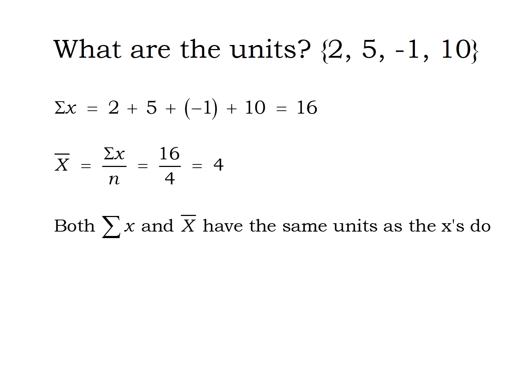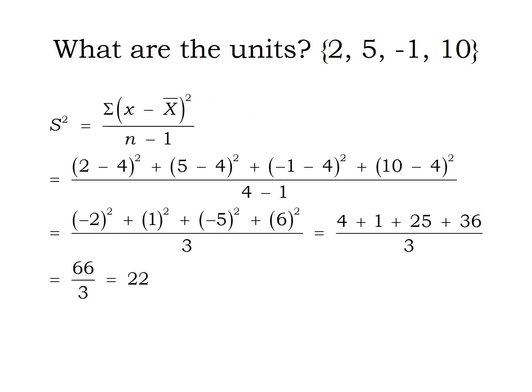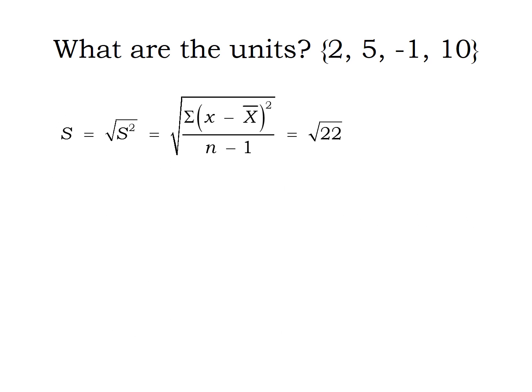So both the sum of the values and the sample mean have the same units as the x's do. So again, if this is dollars, 2, 5, negative 1, and $10, when you add up the x's, you get $16 total. Divide that by four people, that's $4 per person. Now, if that's the case, then when we square those pieces, we get square whatever. So if our units here are dollars originally, then we're getting squared dollars here. And finally, when we take our standard deviation, we would be unsquaring those squared units. And so our sample standard deviation has the same units as the x's do.